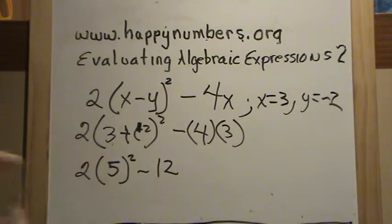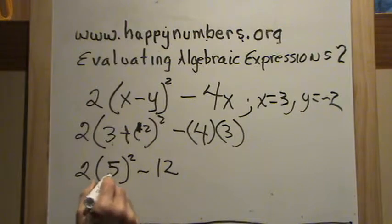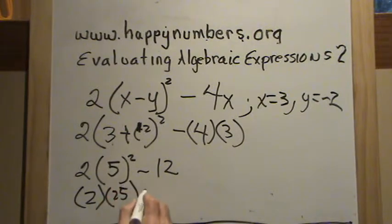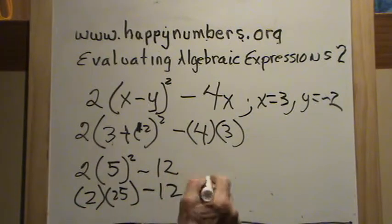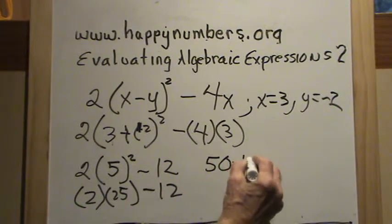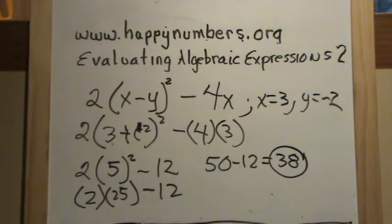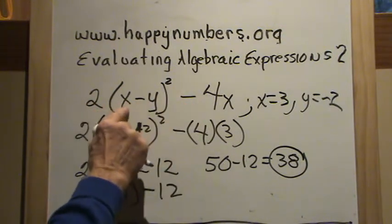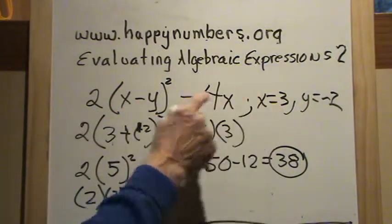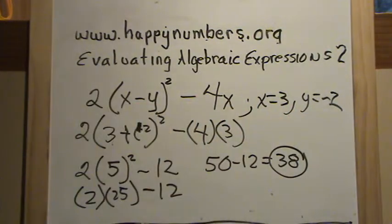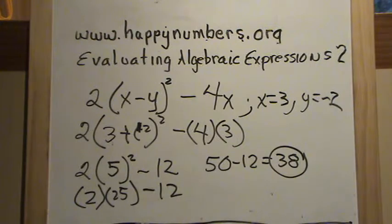4 times 3 is 12. Now we do the exponent: 5 times 5 is 25, so we have 2 times 25 minus 12. 2 times 25 is 50, minus 12 gives us 38. We just substituted our values for x and y, and then using our order of operations — please excuse my dear Aunt Sally — we solved the expression.